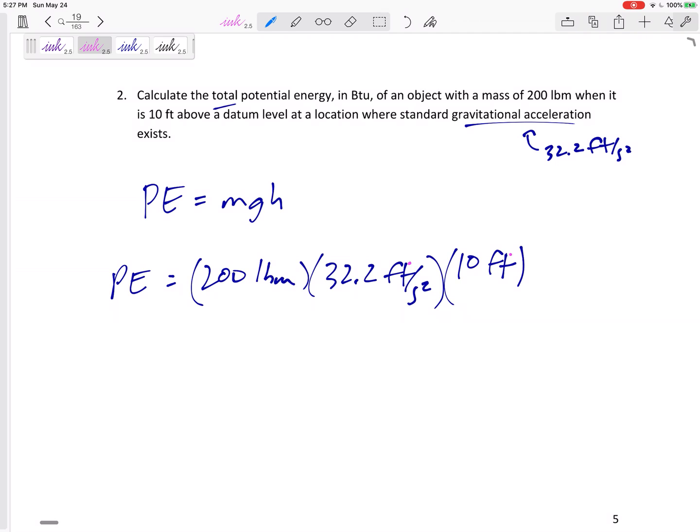So the same conversion: one BTU per pound mass is equivalent to 25,037 feet squared per second squared. I'm left with BTUs, left with BTUs. So potential energy would be 2.57 BTU, 2.57.